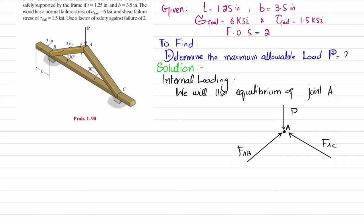The angle here is 30 degrees. If I draw a horizontal line, using alternate angles this angle will also be 30 degrees, and this will also be 30 degrees. So both members make 30 degree angles with the horizontal.